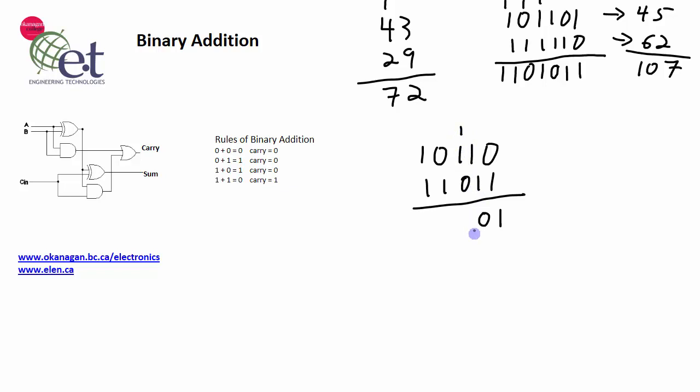1 plus 1 plus 0 is 10, so the 0 goes here, 1 into the next column. 1 plus 0 plus 1, 0 carry the 1. 1 plus 1 plus 1, 1 carry the 1.